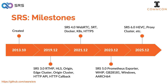We kept improving SRS, and by the time we released SRS 3.0 in 2019, it supported essential live streaming features like clustering, RTMP, HLS, DVR, and forward, as well as HTTP API and callback. After joining Alibaba Cloud in 2017 to work on WebRTC services, I spent two years learning. In 2020, SRS gained a significant feature: WebRTC support. The community also committed to supporting SRT. We began building the community in 2020, and it has grown rapidly since then.